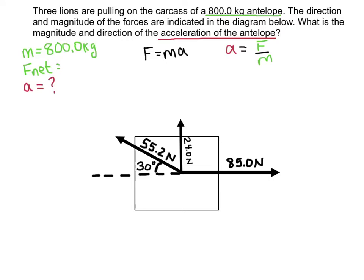How do we figure out net force? Net force is the sum of all the forces acting on an object. When we have forces in both the x and the y direction like this, we are going to have to add vectors. Whenever you are adding forces in multiple directions, what you want to do is add up all of the x direction vectors and then add up all of the y direction vectors.